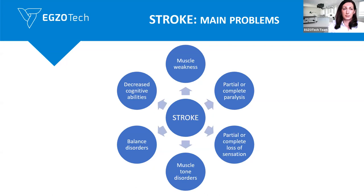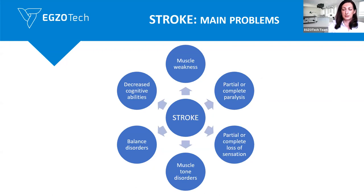It's always dependent on the stroke location and the patient condition. Then, very commonly, partial or complete paralysis — it's often about the upper limb, but also about the lower limb. Sometimes we can also observe lower muscle force and lower muscle activity in the trunk, which is strongly connected with upper and lower limb body function.